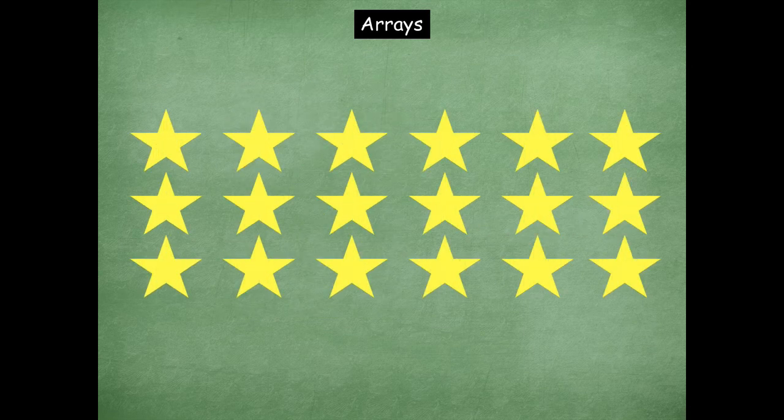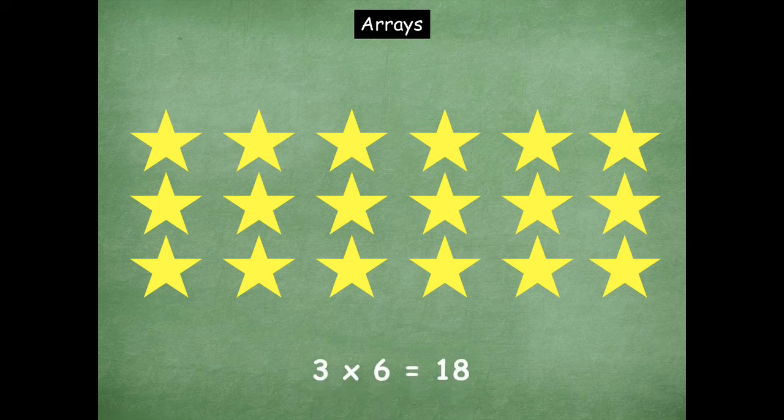All right, let's look at this one. How many rows are there friends? Remember, rows are side to side. Three. How many are in each row? Six. So what's our multiplication sentence that matches this array? Yeah, three times six equals 18.